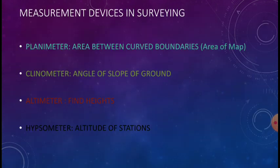Next, measurement devices in surveying. First one is planimeter which will be used for area between curved boundaries, that is area of map. We can measure with the help of planimeter. Next one is clinometer for angle of slope of a ground.